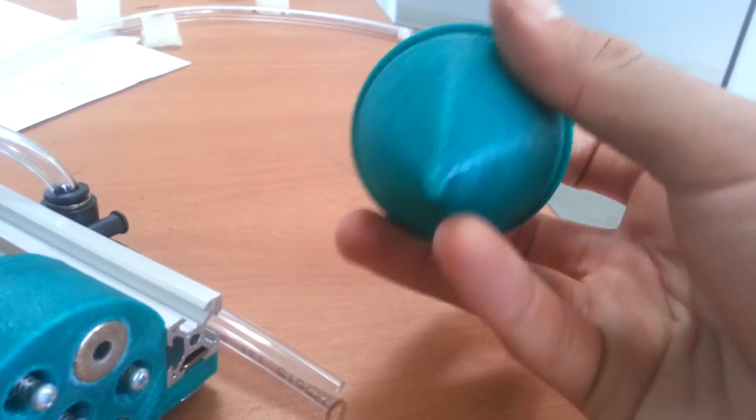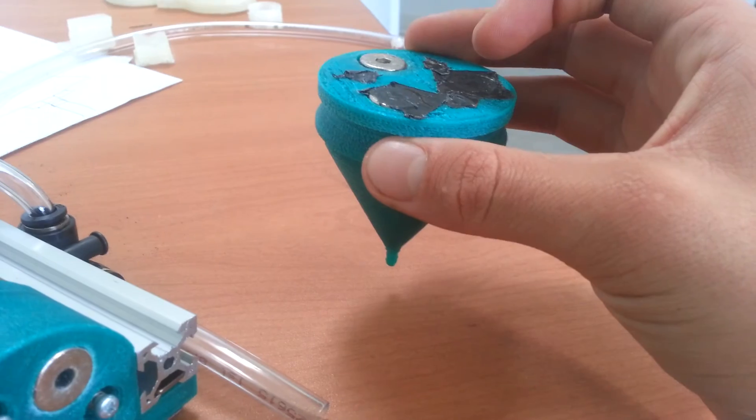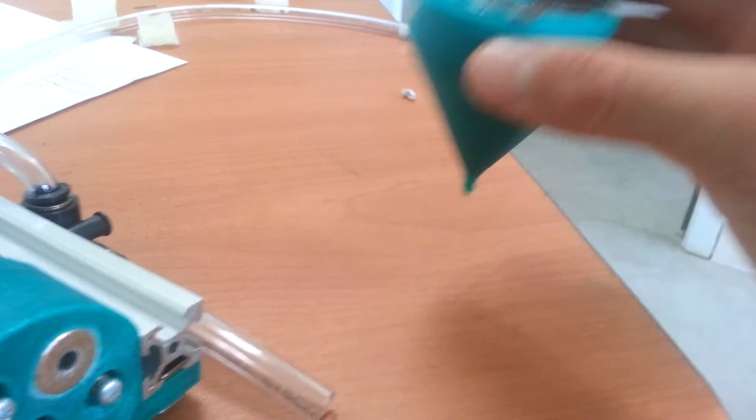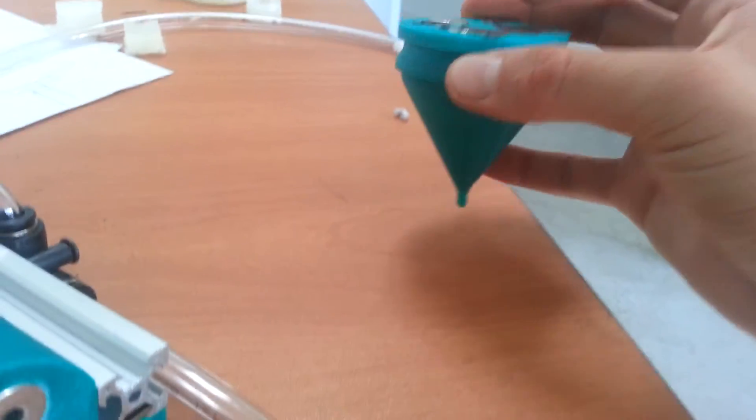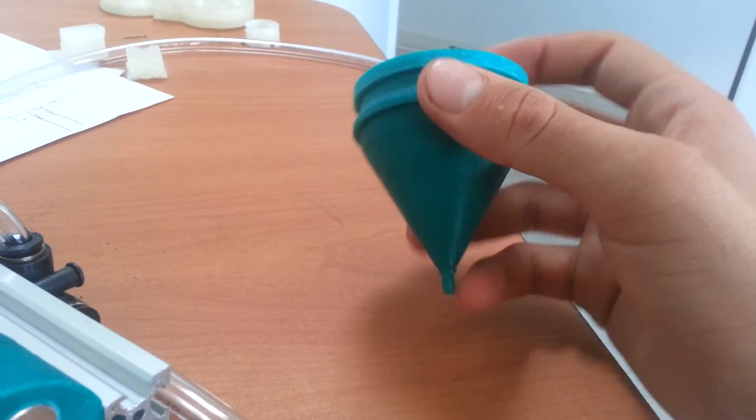So for instance, this is the seed injector. It has a small tip over here that would presumably suck up a single seed and then go over to the right spot and deposit in the ground, cut the vacuum, and then move on.